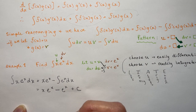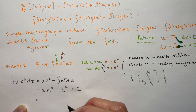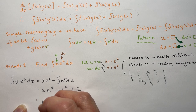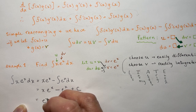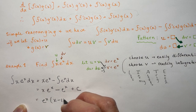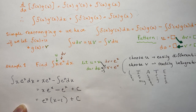So that gives us x·e^x minus e^x plus c. You may also write that out as e^x·(x minus 1) plus c, if you want to get a little fancy. But that's all you have to do.